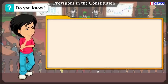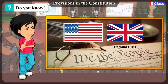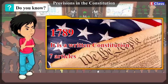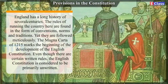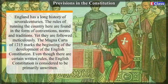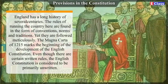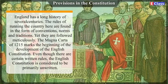Do you know? The administration of countries like America (USA) and England (UK) is carried out as per their respective constitutions. But these two constitutions are different. The American constitution came into force in 1789. It is a written constitution and has only seven articles. Even after 225 years, the American government follows the same constitution. England has a long history of several centuries. The rules of running the country here are found in the form of conventions, norms and traditions. Yet, they are followed meticulously. The Magna Carta of 1215 marks the beginning of the development of the English constitution. Even though there are certain written rules, the English constitution is considered to be primarily unwritten.